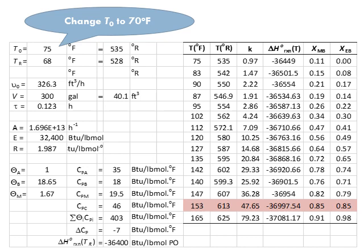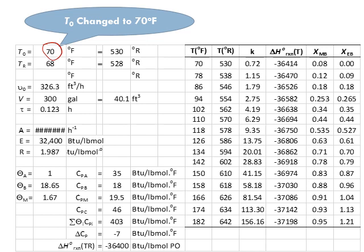Here is the tab in Excel for 8.8. You can see the feed temperature is 75 - we're going to change it to 70. Once I change it to 70, automatically the temperature from which I start the range also changes to 70, because I have linked this cell to that cell. So now we start at 70 and increase by 8 degrees Fahrenheit.